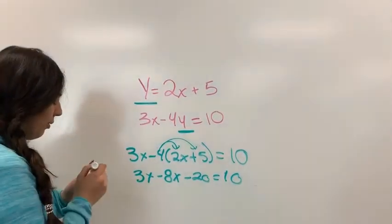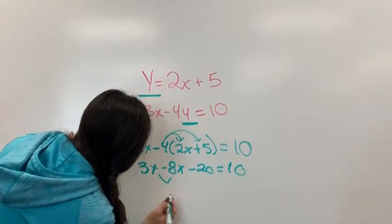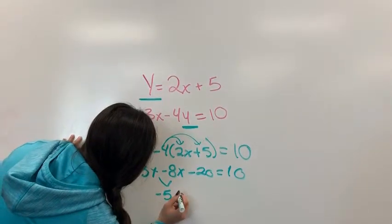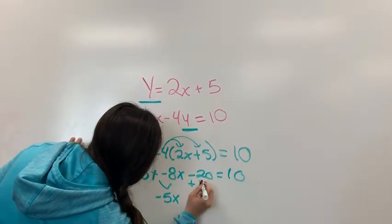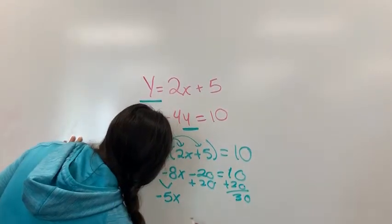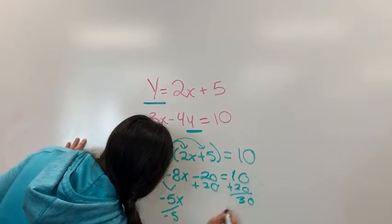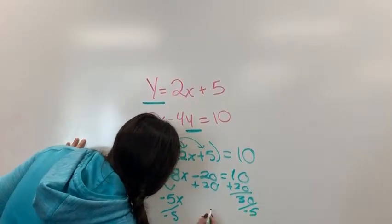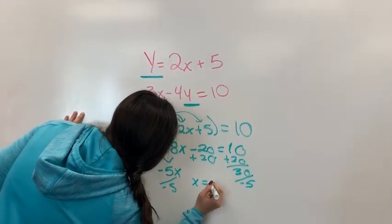And so you combine like terms. And so you have these two which equal negative 5x. You add your 20, and it equals 30. And now you just divide to get x by itself. And x equals negative 6.